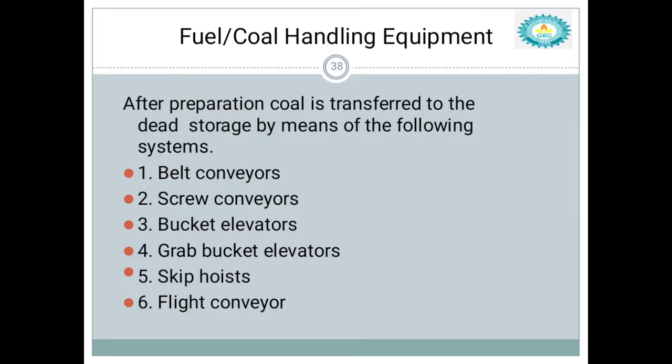After preparation of coal, we transfer it to the coal storage site with the help of different conveyors. Those are belt conveyors, screw conveyors, bucket elevators, grab bucket elevators, and flight conveyors.